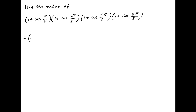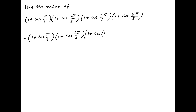cos(5π/8) can be written as cos(π - 3π/8), and cos(7π/8) can be written as cos(π - π/8). Therefore the given expression is equal to (1 + cos(π/8))(1 + cos(3π/8))(1 + cos(π - 3π/8))(1 + cos(π - π/8)).